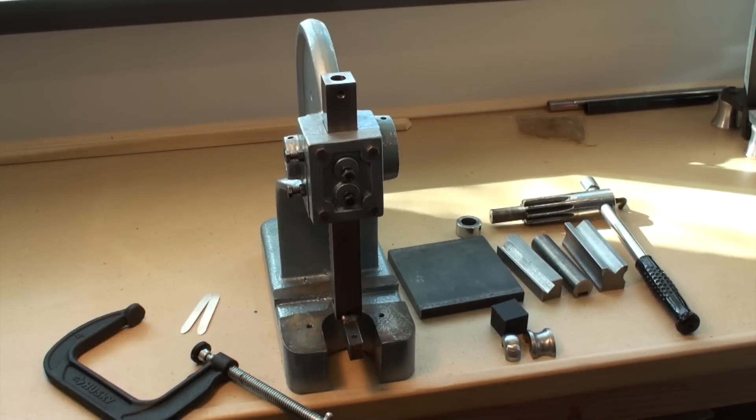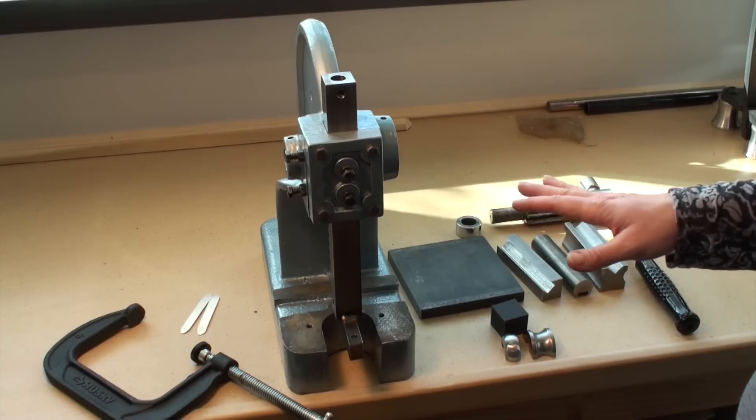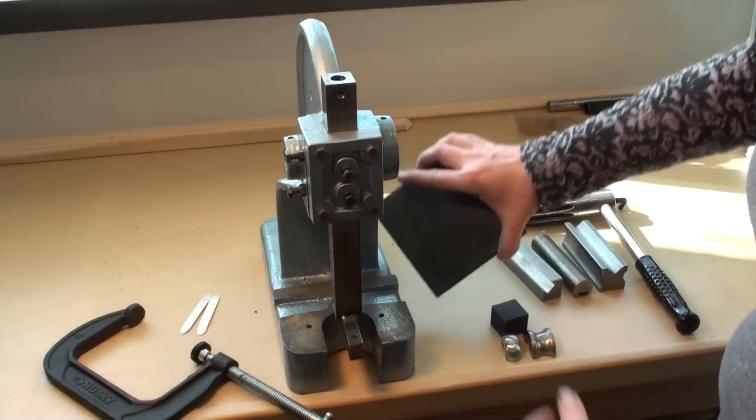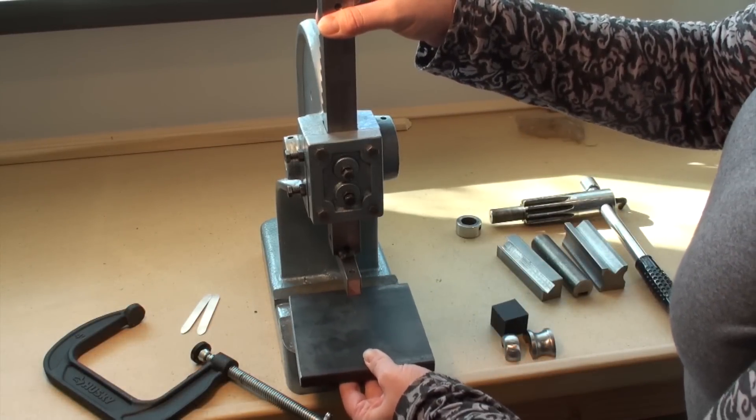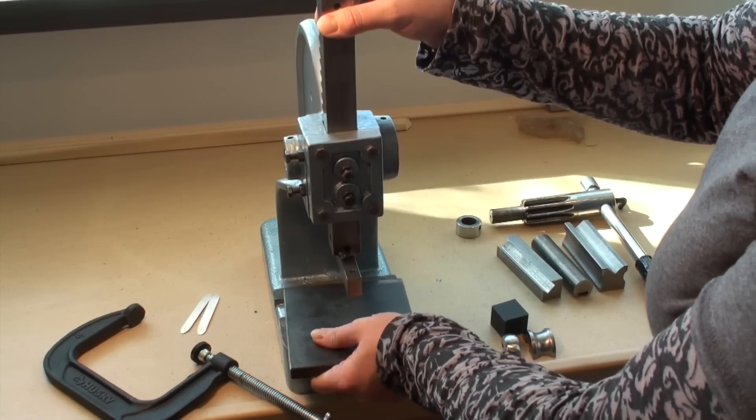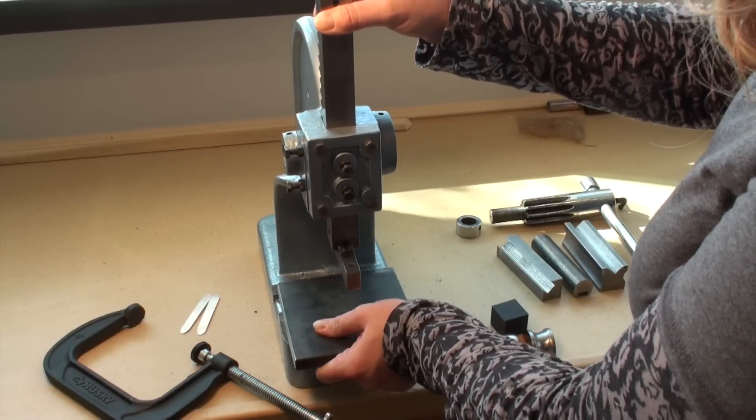This is the Arbor Press that's offered by Potter USA, and it's just one that's been modified a little bit to accept different types of tooling. First thing I'm going to do is attach our bottom plate to this, so I'm just going to lift up the Arbor here. It is magnetic, it's very strong, so I just like to position this where I want it.